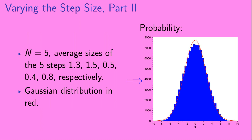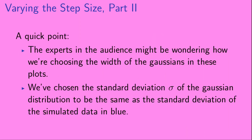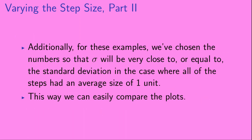Here we show the probability distribution for the location of the object for n equals 5, with average step sizes of 1.3, 1.5, 0.5, 0.4, and 0.8 respectively, and we draw in a Gaussian distribution in red. The experts in the audience might be wondering how we're choosing the width of the Gaussians in these plots. We've chosen the standard deviation sigma of the Gaussian distribution to be the same as the standard deviation of the simulated data in blue. We've chosen the numbers so that sigma will be very close to the standard deviation in the case where all steps had an average size of 1 unit, so we can easily compare the plots.